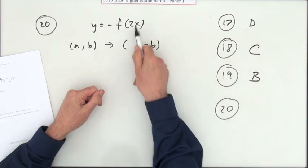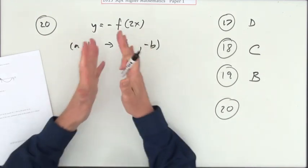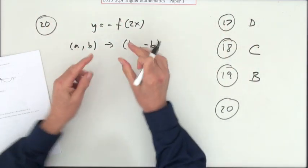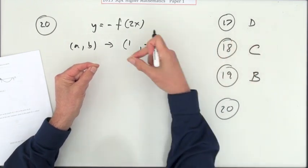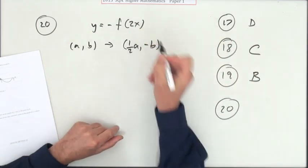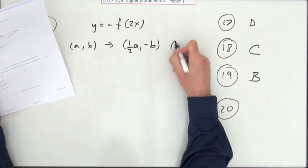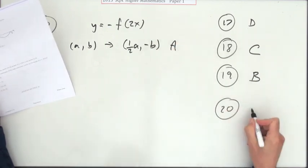So if it was originally a, it'll be now doing a half of a. So where's that? A half of a, negative b is... ah, put it here, A.